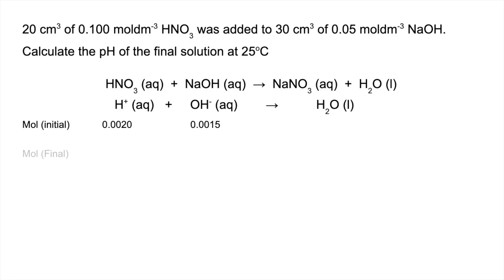So the next thing we do is work out the final moles, and you can see the acid's in excess, so all we do is take away this number here from this number here to get how many moles of, in this case, acid are left - H+.